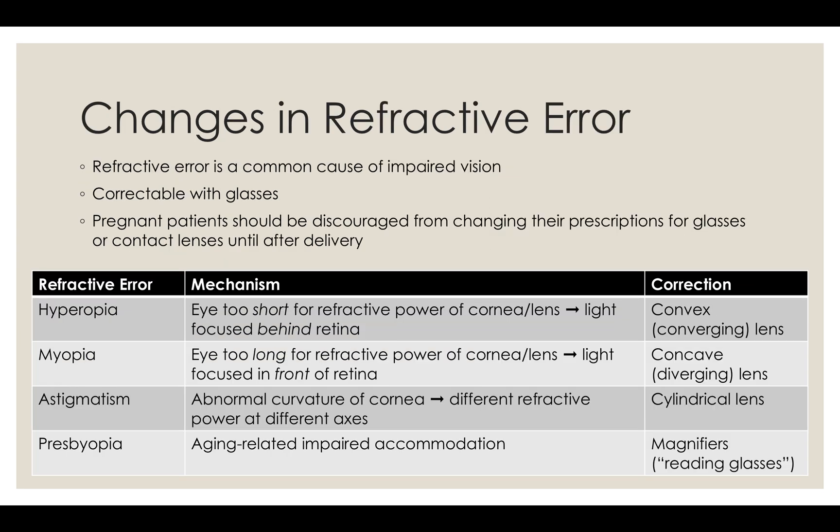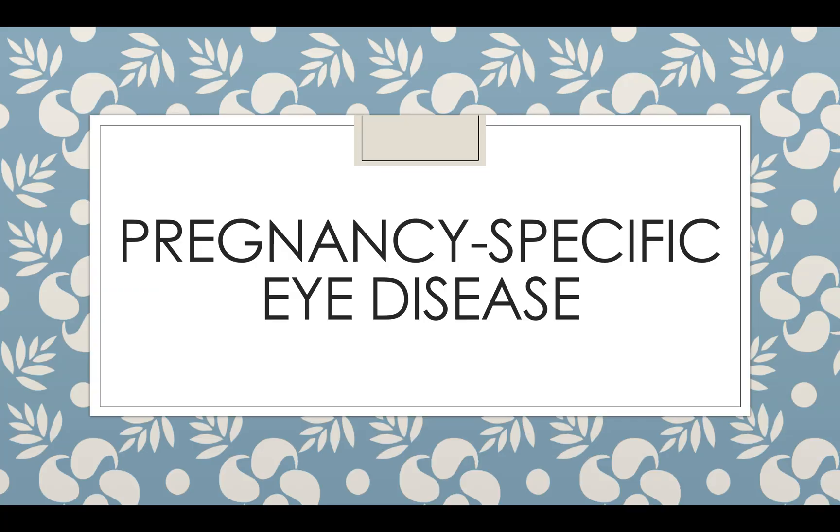When the refractive power of the lens or the cornea focuses on a point different than the eye length, a refractive error is said to occur. In hyperopia, light focuses the image behind the retina, and in myopia, in the front. Corrective lenses for hyperopia are convex, and for myopia, concave. The shifting refractive power of astigmatism requires a cylindrical lens for image adjustment. Presbyopia, usually acquired later in life, rarely develops in pregnancy.